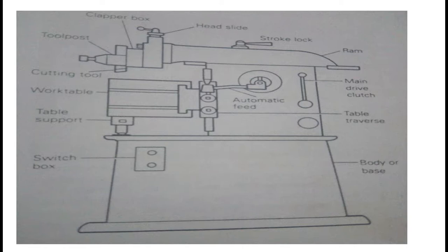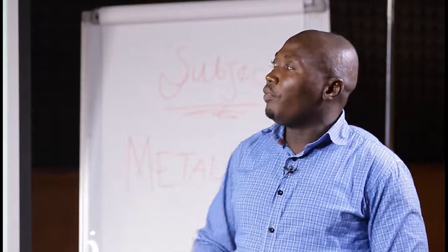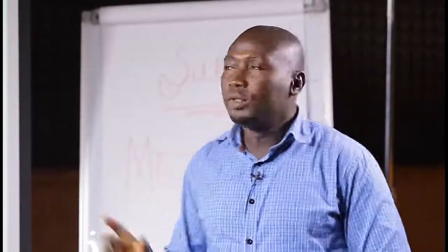All the parts of the shaping machine are highlighted on the screen. We have the clapper box, the hand slides, the stroke lever, the ram, the main drive clutch, the table reverse, the body, the base, the tool post, the cutting tool, the work table, the table support, and the switch box where you switch the machine on and off. Knowing each part and its function is very important.